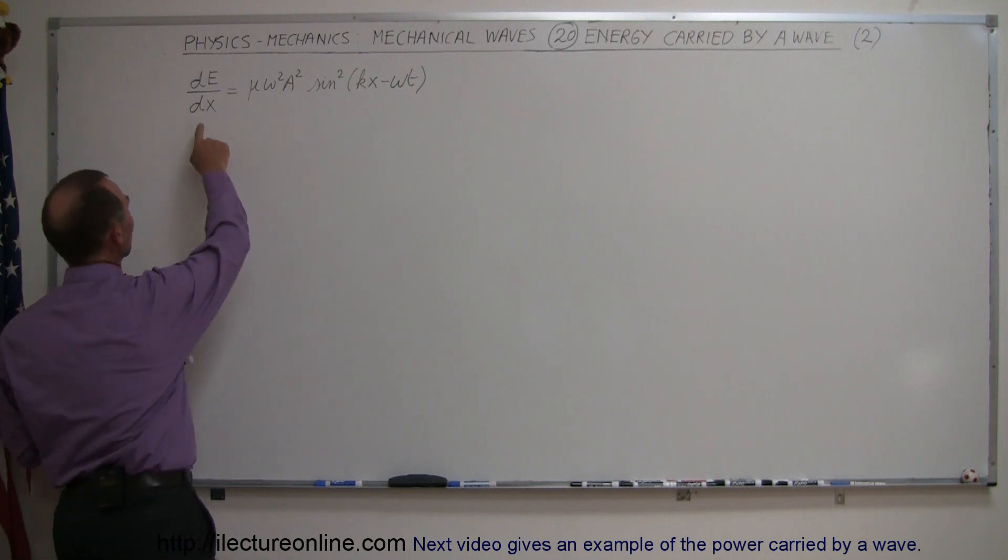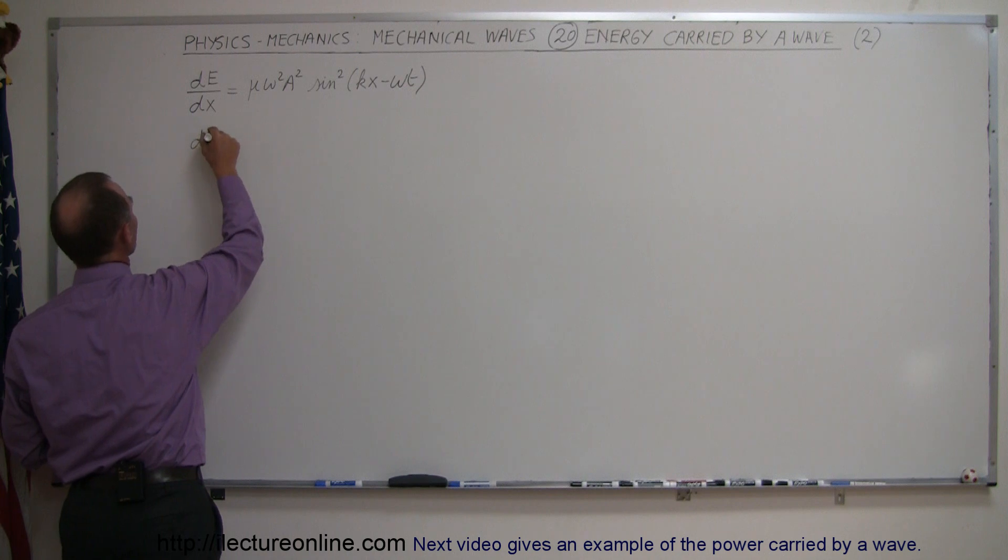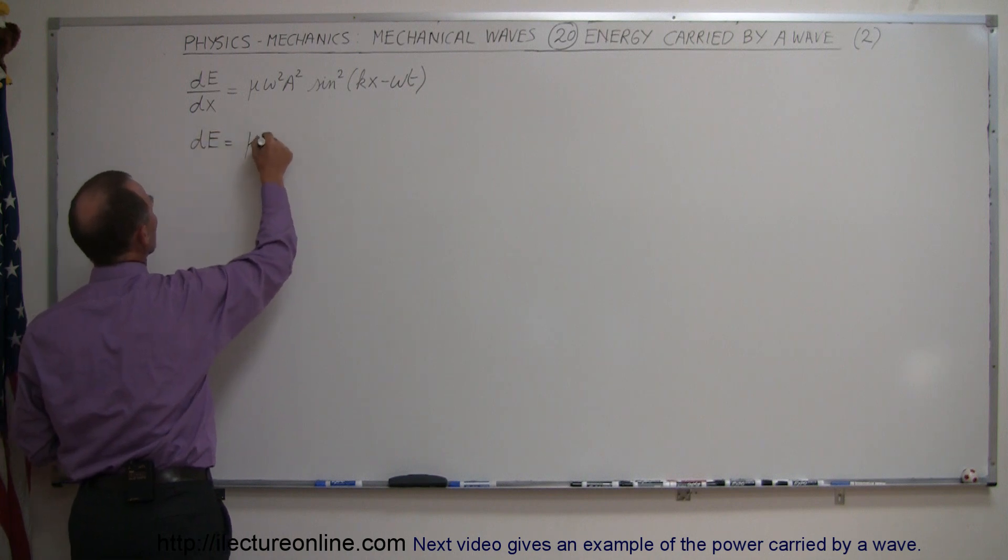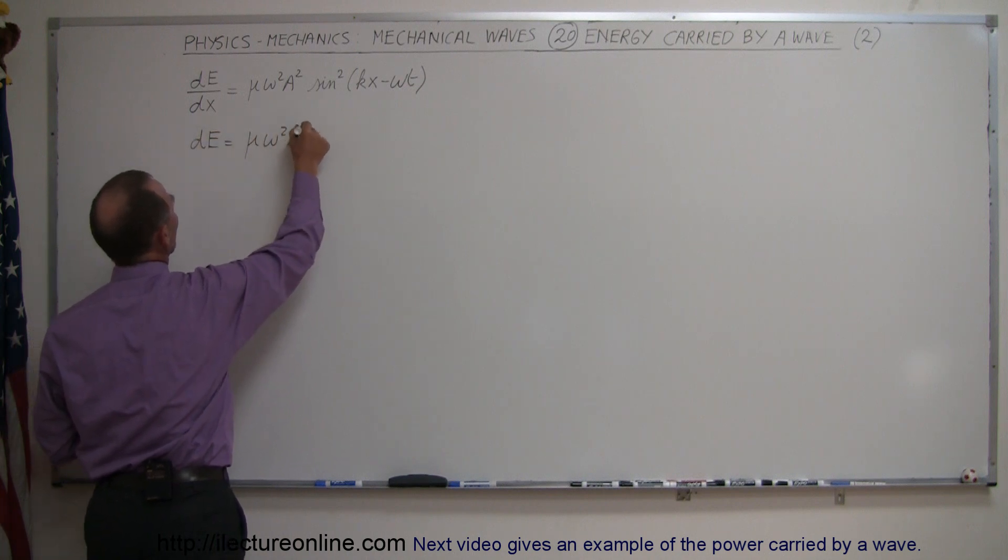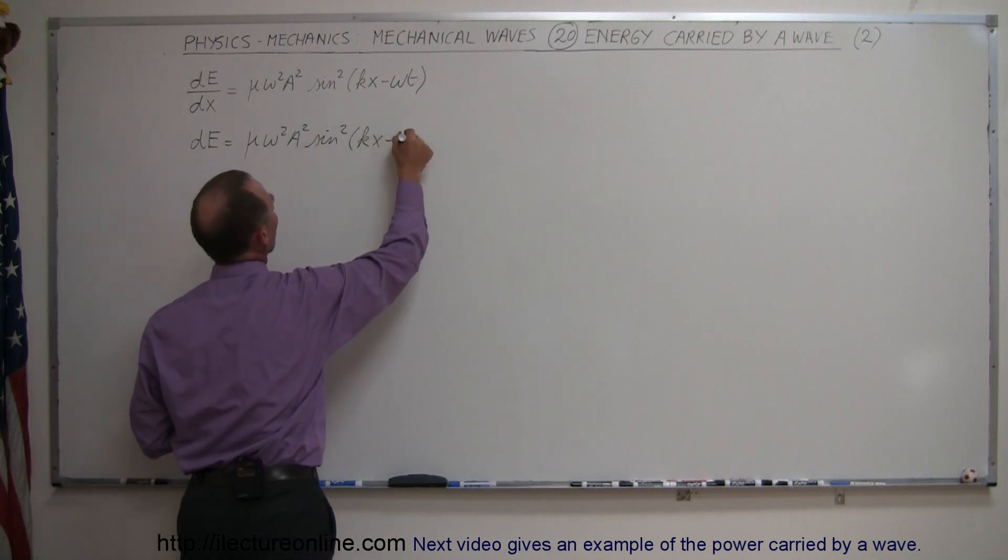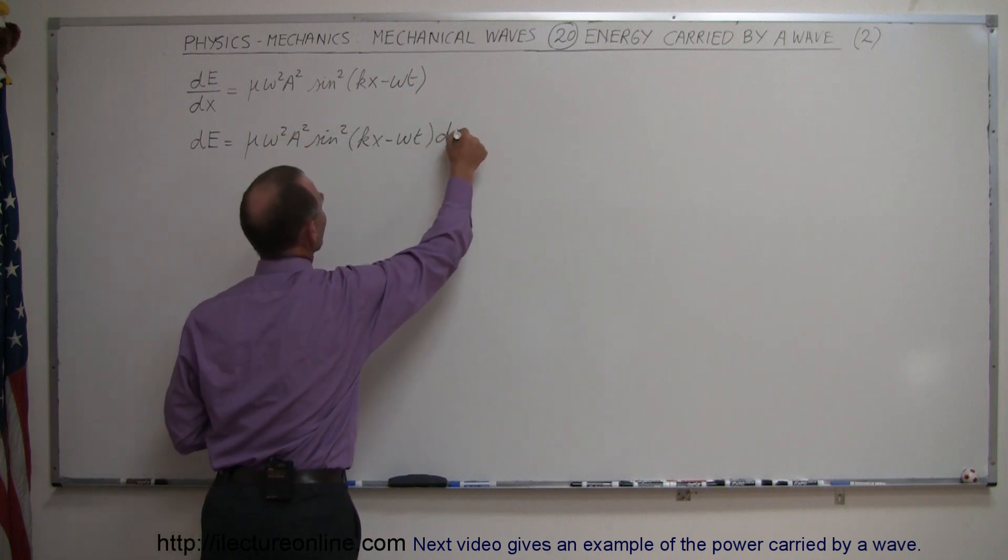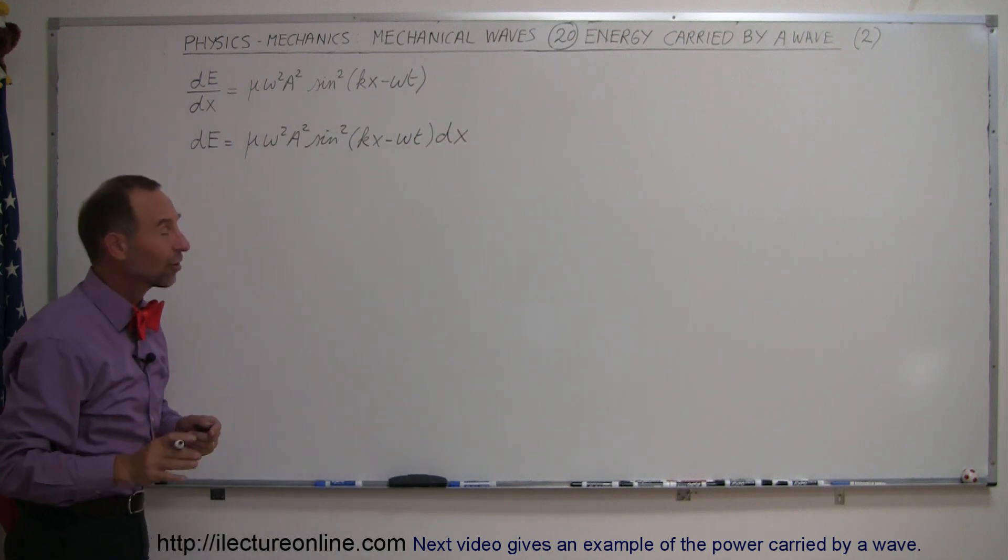So what we're going to do now is we're going to put the dx back on the other side, so we're going to write this as dE is equal to mu omega squared a squared times the sine squared of Kx minus omega t. Now we put the dx over here so we get a dx. Now we're going to divide both sides by dt.